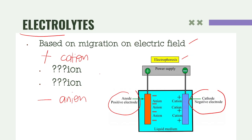Please be careful with the terms: anion and anode share the same beginning letters, as do cation and cathode. When talking about electrodes, the ending is ODE; when talking about electrolytes, the ending is ION. Remember the principle that opposites attract — cations being positively charged go to the cathode (negative electrode), while anions being negatively charged go to the anode (positive electrode).